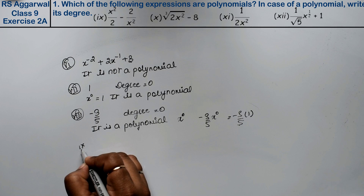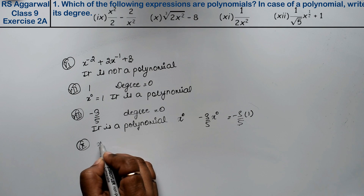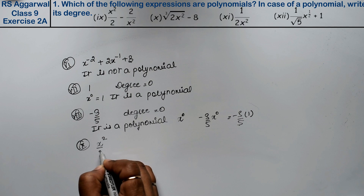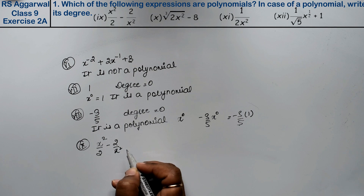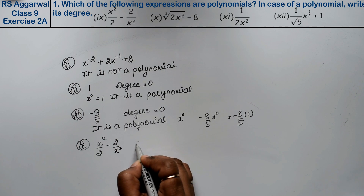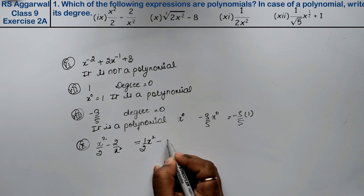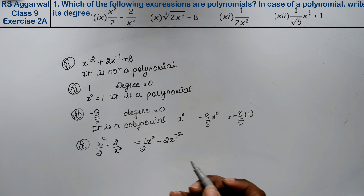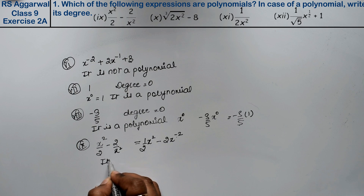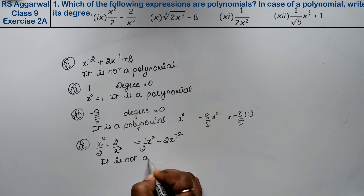Ninth part is x²/2 minus 2/x². We can rewrite this as (1/2)x² minus 2x to the power minus 2. Since the power is now negative, hence it is not a polynomial.